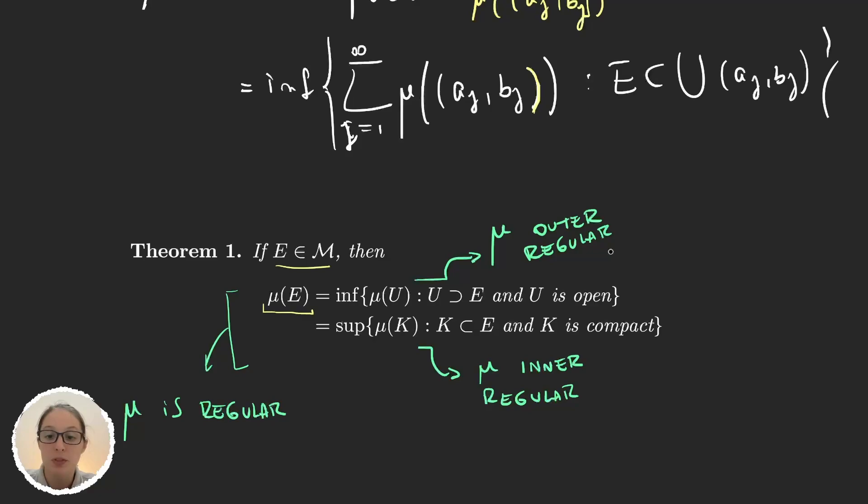There are examples of measures that are inner regular and not outer regular, examples of measures that are outer regular but not inner regular, and examples of measures that are none of these.